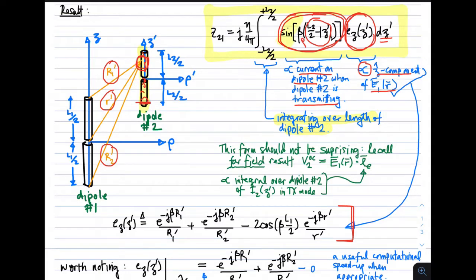This form, where we have something to do with the current in the transmit mode multiplied by a receive electric field, should not be surprising. You may recall that the far field result for the open circuit potential induced to the dipole equals the instant electric field intensity dot product with the vector effective length. The vector effective length is given by the integral over the dipole assuming a current distribution in the transmit mode.